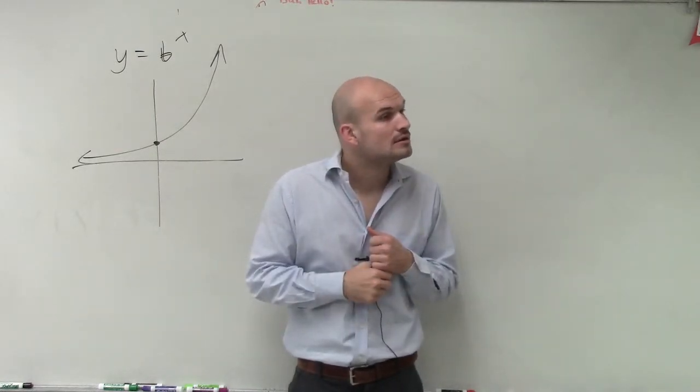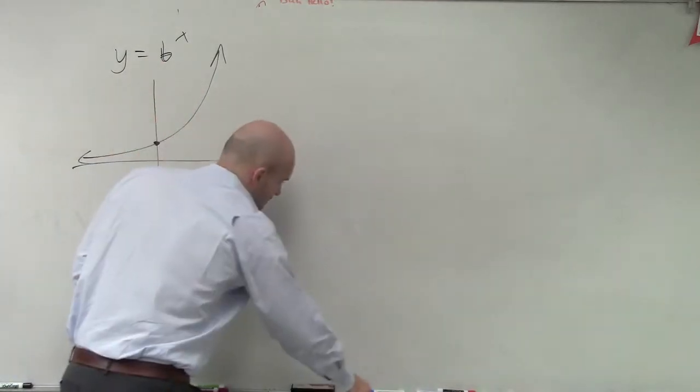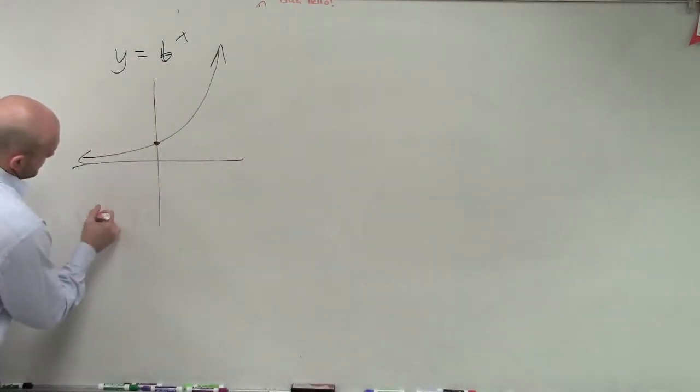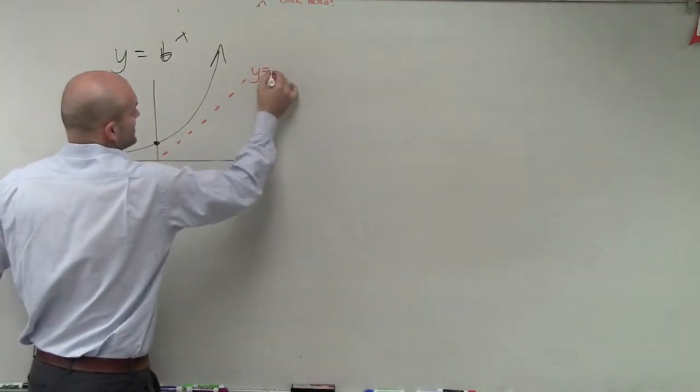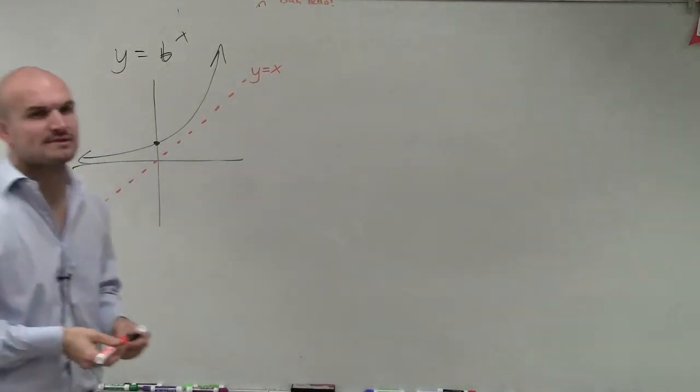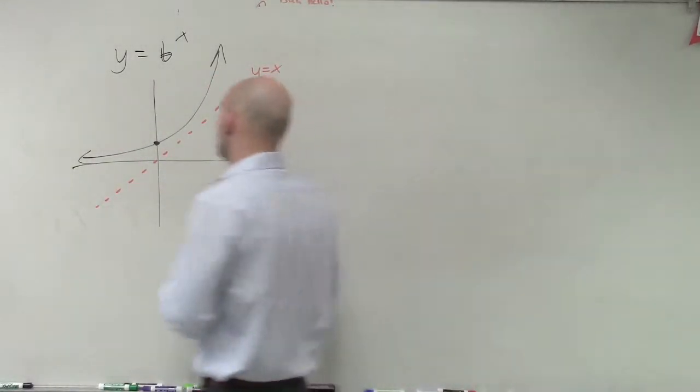Reflect it over the x equals y line. And what else do we know when reflecting over the x over y line, if that's kind of hard for somebody to do, what do we do with the coordinate points? Switch them. Swap them.